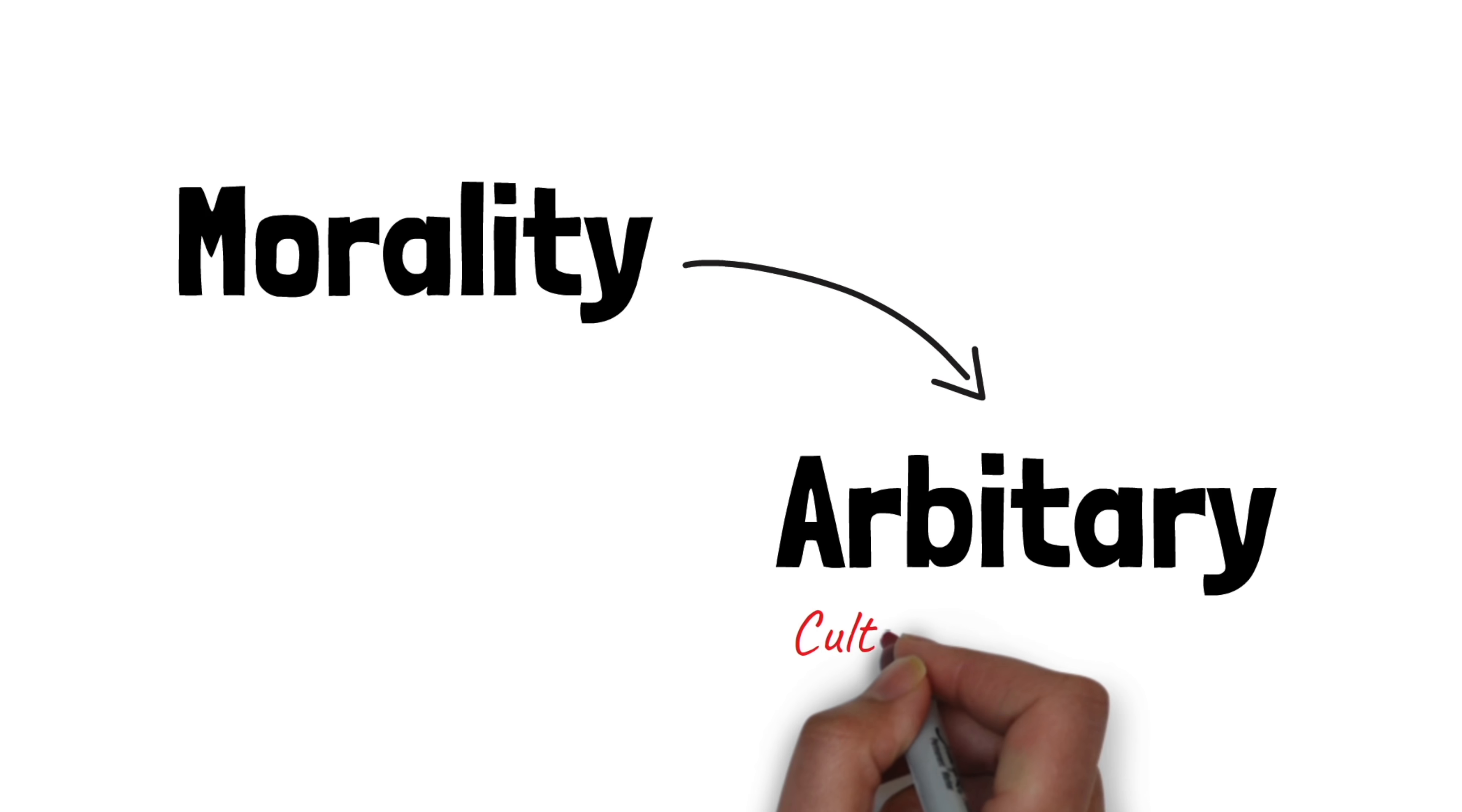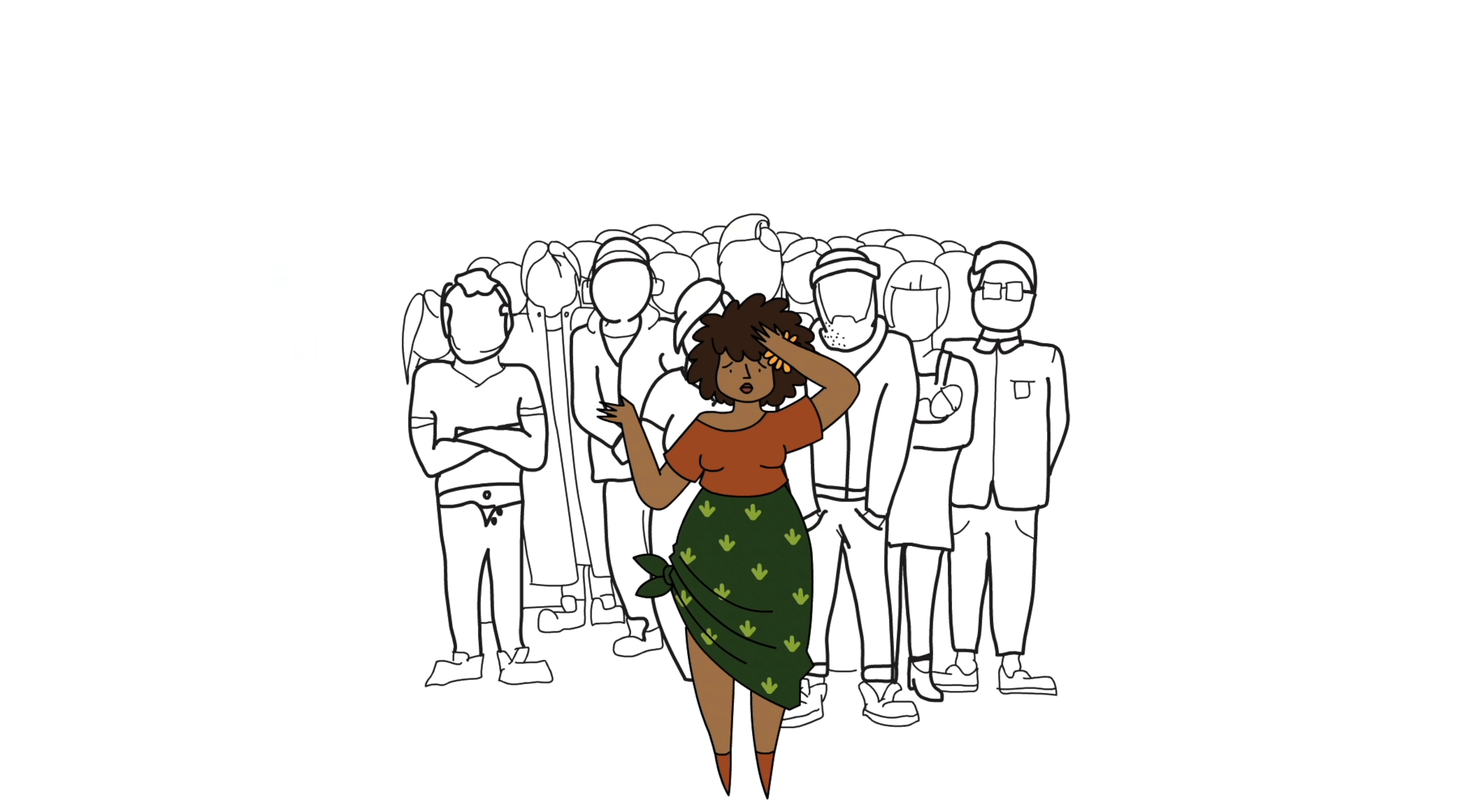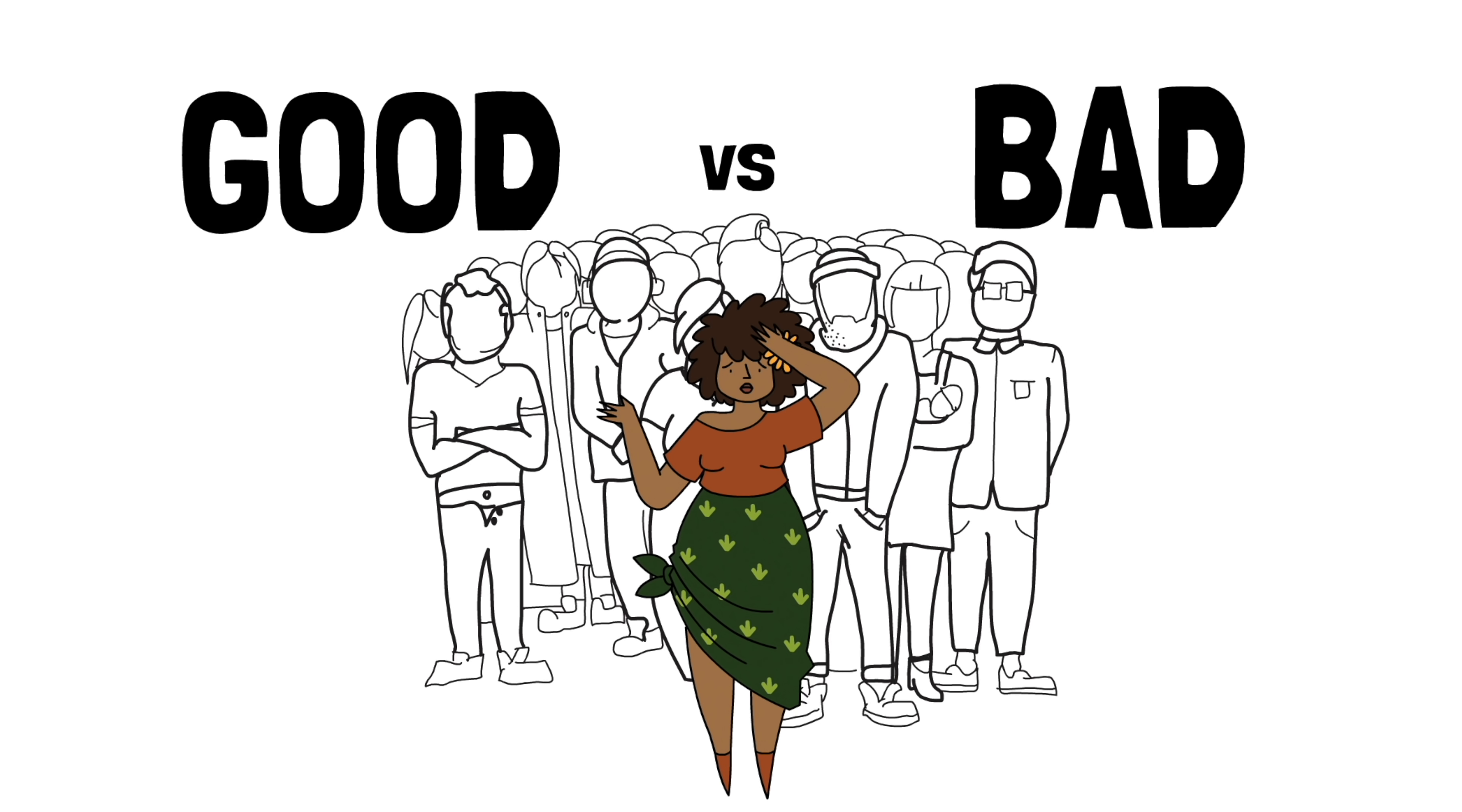Modern relativists like to think of morality as something that's just arbitrary, like it's a cultural construction. Society one thinks that A is bad and society two thinks that B is bad, and there's no commonality underneath all that. But the existentialists sort of undercut all that.